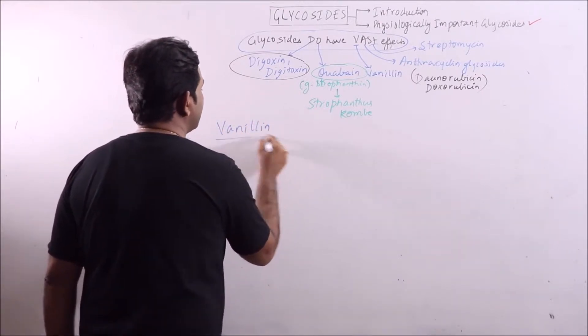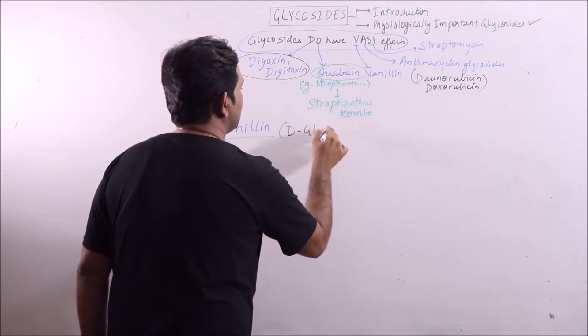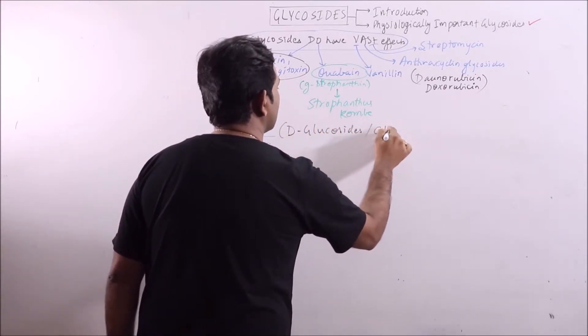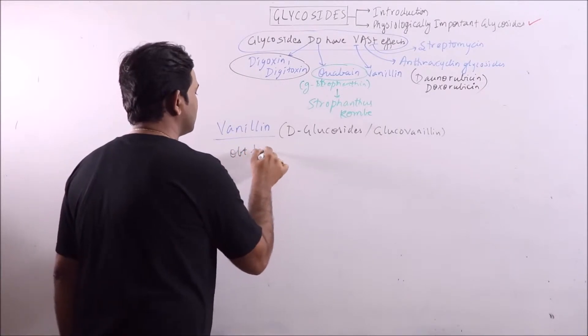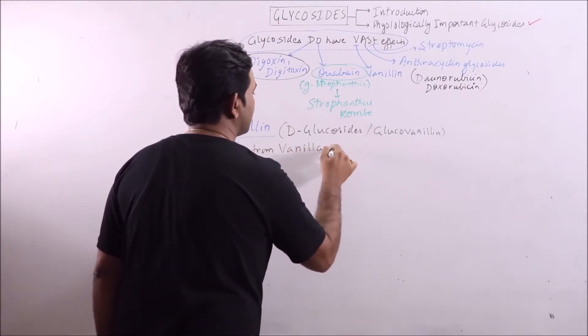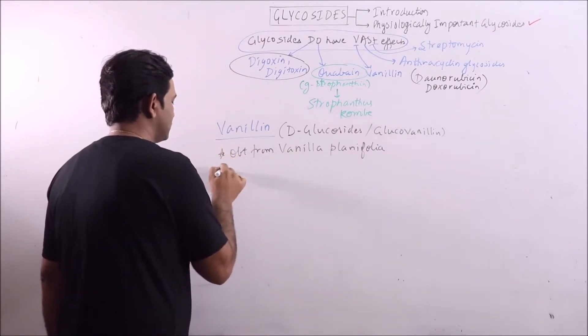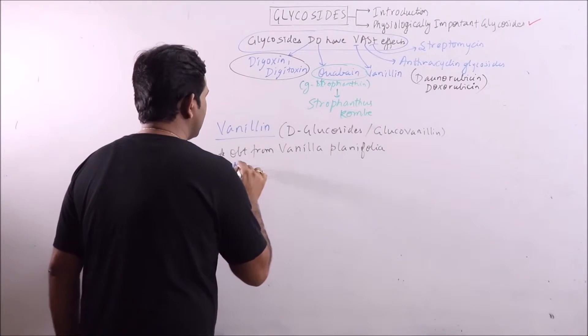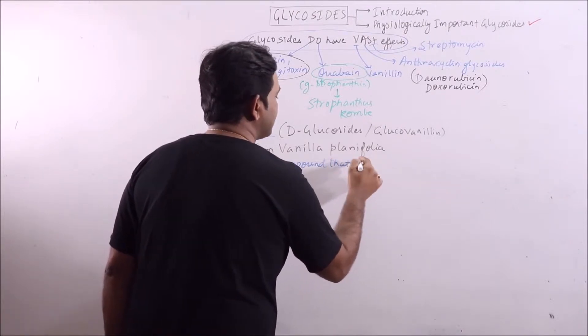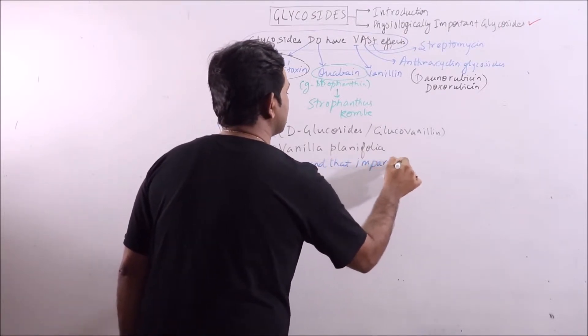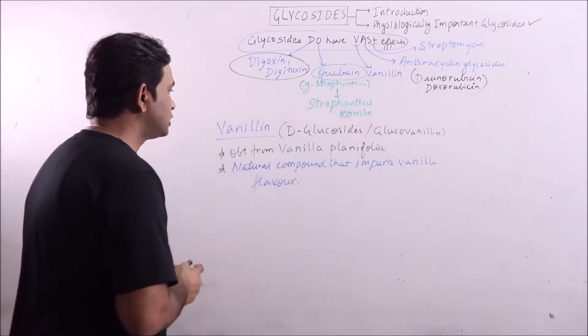Vanillin is also known as deglucosides or glucovanillin. It is obtained from Vanilla planifolia. It is a natural compound that imparts vanilla flavor. So, this is vanillin.